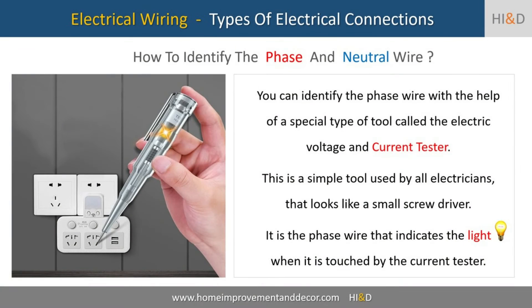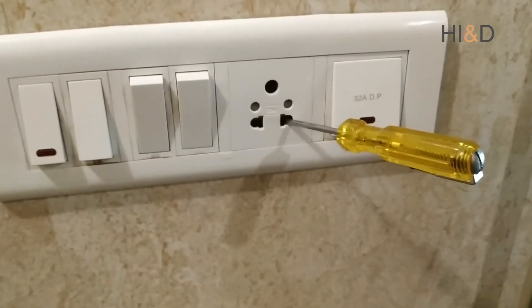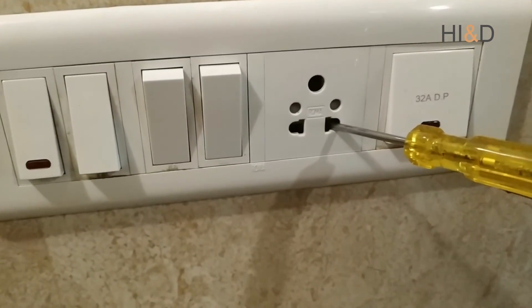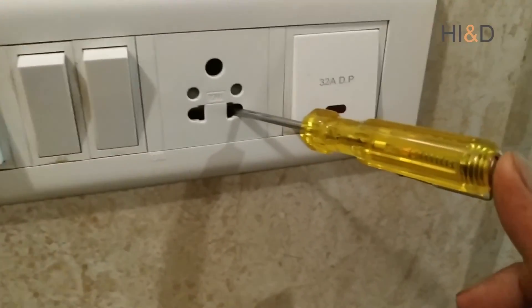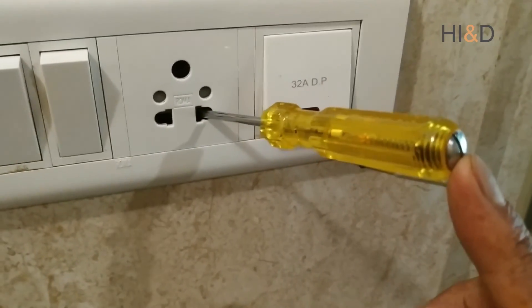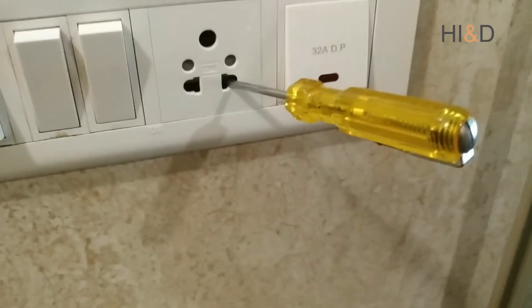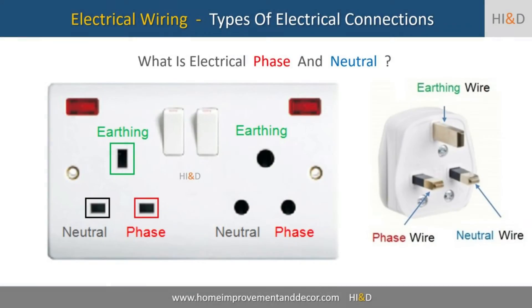You can identify the phase wire with the help of a special tool called the voltage and current tester. This is a simple tool used by all electricians that looks like a small screwdriver. It is the phase wire that causes the light to indicate when it is touched by the current tester. On the three pin socket present on the switchboard, the phase line is always connected to the bottom right hand pin. This is a standard mandatory practice to keep the phase line on the right hand side of the plug point.